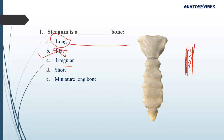Its shape is not irregular — the upper part is quadrangular and its shape is almost regular, so it is not an irregular bone. It is not a short bone either; short bones are carpal and tarsal bones. It is also not a miniature long bone — those are metacarpal and metatarsal bones. So sternum is a flat bone.